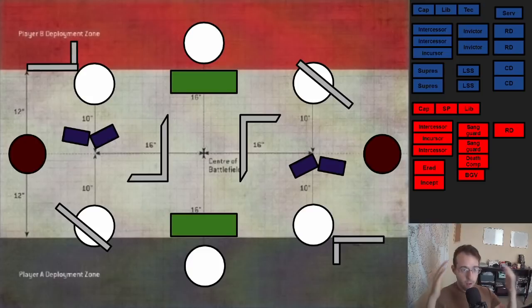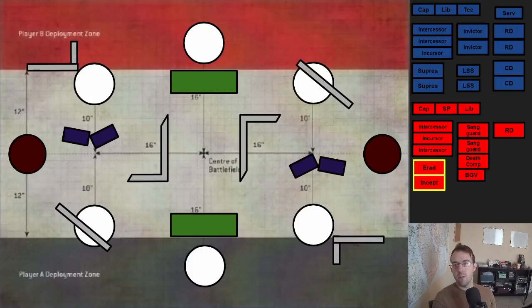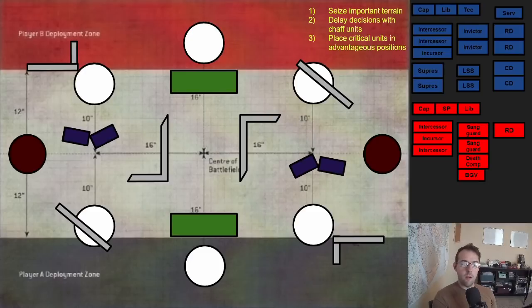Now for this example, I'll use my blood angels. However, I do implore you guys to think about your own list and how you would deploy against the ultramarines. You have to be an active learner if you're trying to get better at something. Just consuming YouTube content is great for me, but I want you guys to get better. I think I can hide a good portion of my list, and I also want to make sure that my eradicators get into a good firing position. So I'm going to put my eradicators as well as my inceptors in deep strike and reserve. Whenever I'm thinking about deployment, my first goal is to seize those important pieces of terrain.